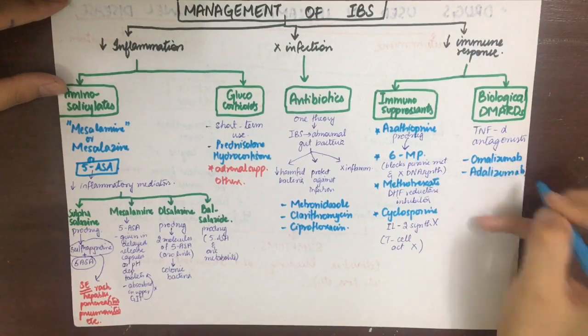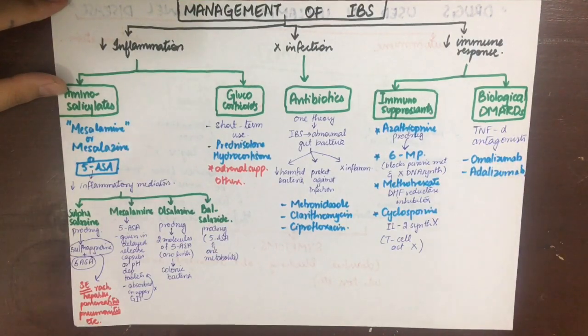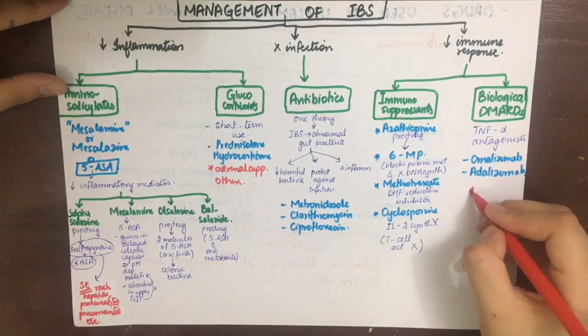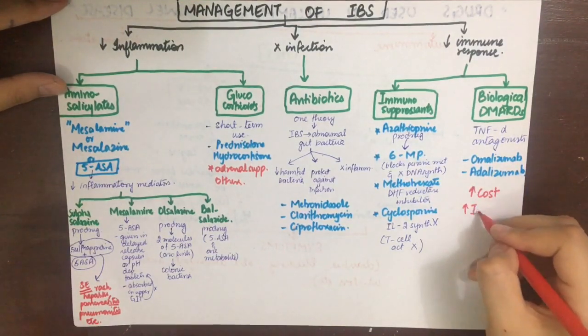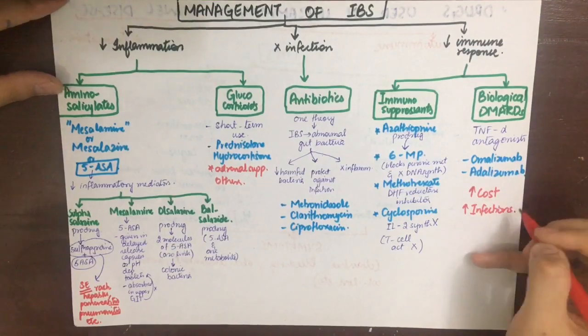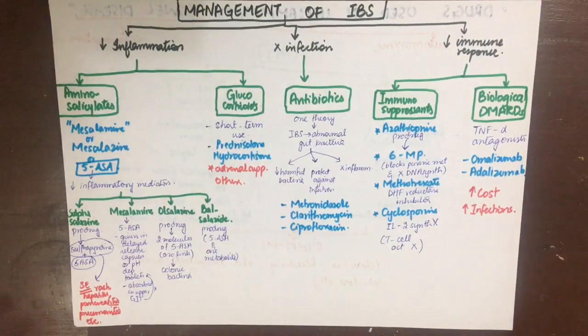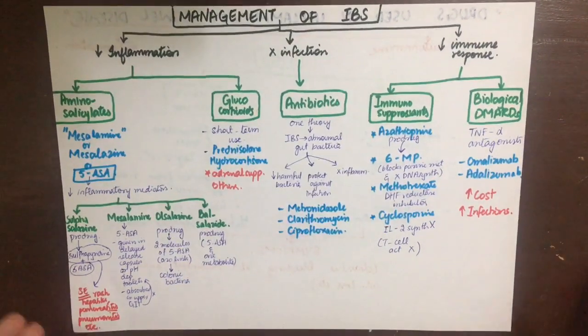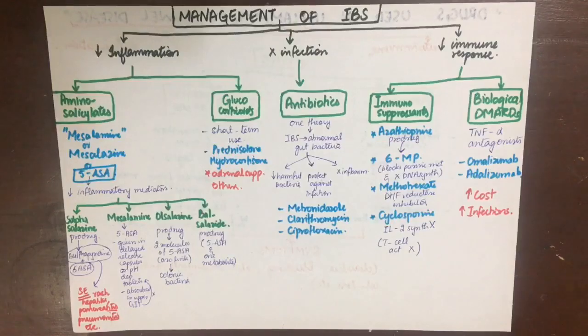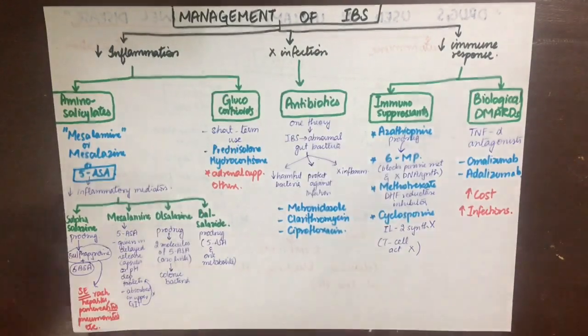The biological DMARDs act as TNF-alpha antagonists. Drugs such as infliximab can be used, but their use is restricted due to increased cost and risk of infections from immune suppression. That covers the drugs used in inflammatory bowel disease.